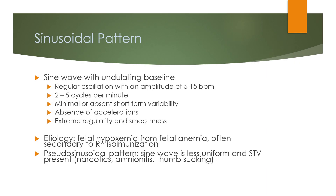The sine wave pattern features an undulating baseline with regular oscillations at an amplitude of 5 to 15 beats per minute, 2 to 5 cycles per minute, minimal or absent short-term variability, absence of accelerations, and extreme regularity and smoothness. Etiology includes fetal hypoxemia or fetal anemia, often secondary to RH isoimmunization. A pseudo-sinusoidal pattern has a less uniform sine wave with STV present, and is associated with narcotics, amnionitis, and thumb sucking.